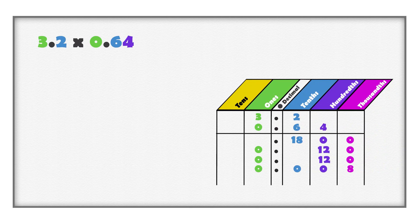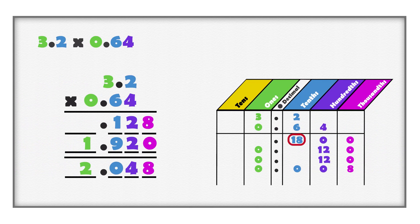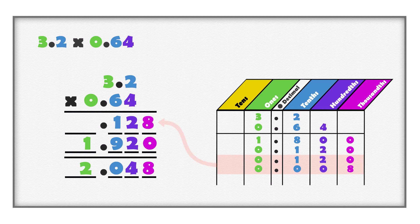Notice that we get the same product using each model. The estimate still aligns with the product, so we can be confident about our work and the answer. Compare the place value chart model and the algorithm. Remember, eighteen tenths is the same as one and eight tenths, and twelve hundredths is the same as one tenth and two hundredths. Notice the partial products in the algorithm. The same partial products are used in the algorithm and the place value chart.